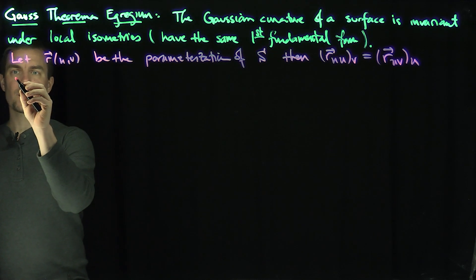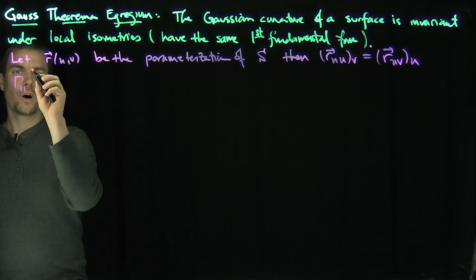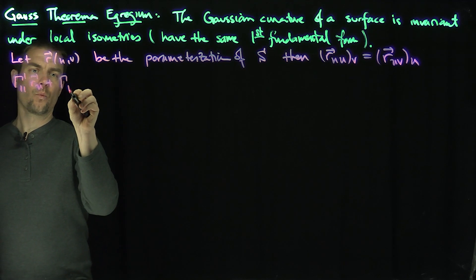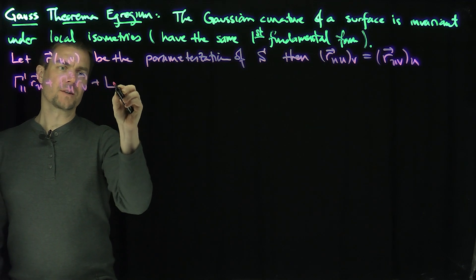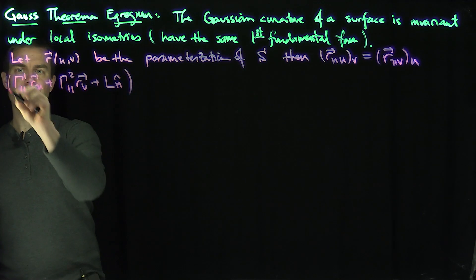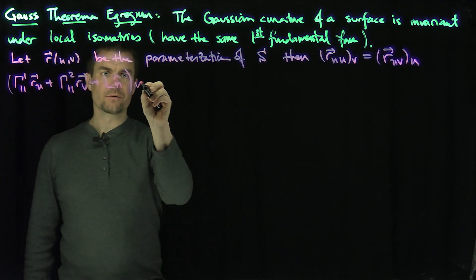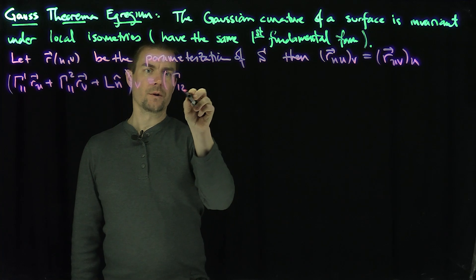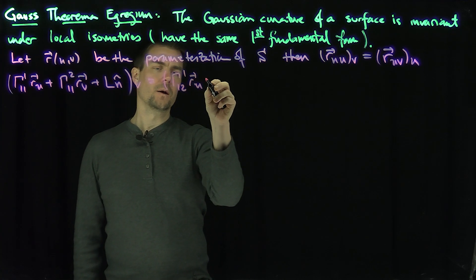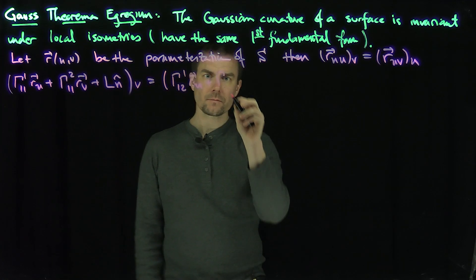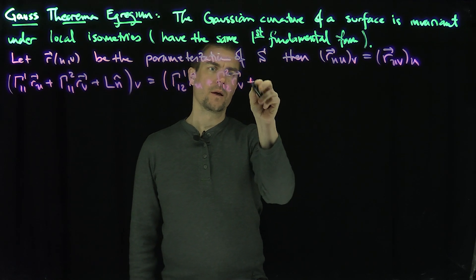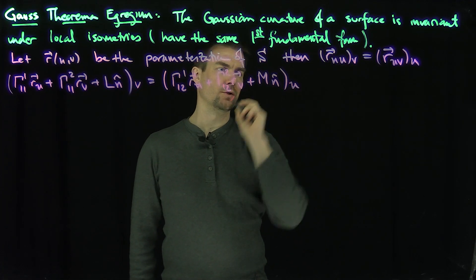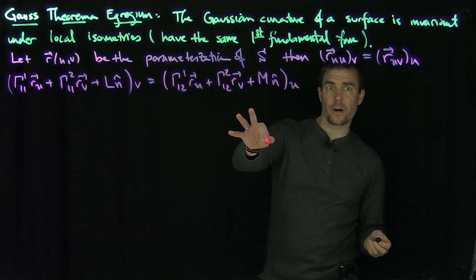That tells me that Γ¹₁₁ R_U + Γ¹₁₂ R_V + L N̂ — that is R_UU — the V derivative of this has to equal the U derivative of this expression: Γ¹₂₁ R_U + Γ¹₂₂ R_V + M N̂, the derivative with respect to U.